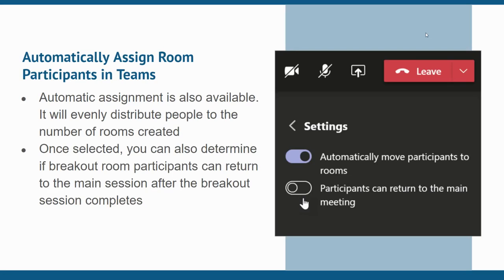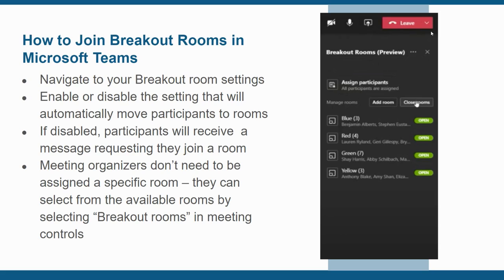Once selected, you can also determine if breakout room participants can return to the main session after the breakout session is complete. From your breakout room settings, you can switch a toggle to automatically move people to rooms. If you enable this, participants will automatically be moved into their assigned breakout room when you launch the feature. If you disable it, participants will receive a message requesting to join a breakout room but won't enter the room unless they select join room.